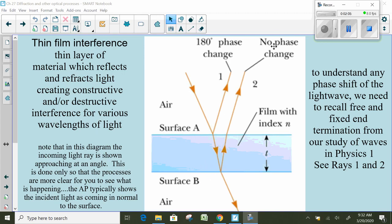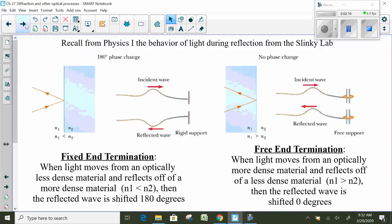To understand that, we're going to go back to something you studied in physics one, and that's from the slinky lab. You guys went down the hallway by the gym and you played with slinkies for an hour, and hopefully in the post lab you had a discussion about free end and fixed end termination. I think this is a page that you probably want to stop the video and copy down the notes. You need to understand, and you may remember this, but some of the kids don't.